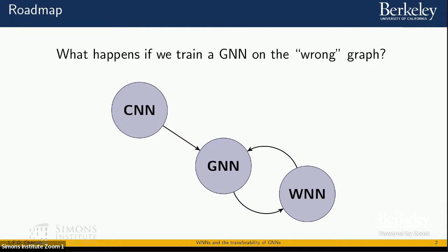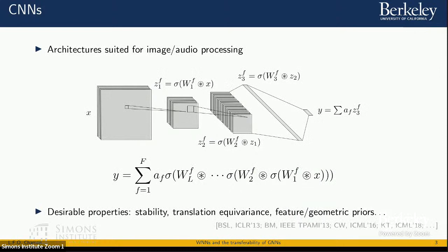To make sense of this question and then answer it, I'll go through the path from convolutional neural networks to graph neural networks, then to graphon neural networks, and then back. Let me start by revisiting how we get from convolutional neural networks to graph neural networks.